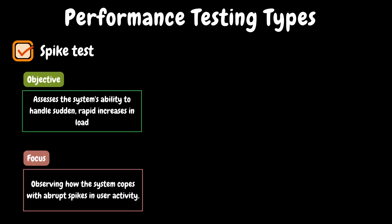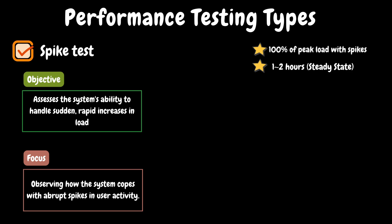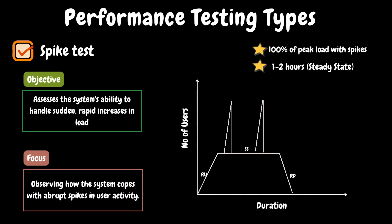The next one on our list is the spike test. This is also an optional test and will be scheduled based on specific requirements. Some applications may experience sudden spikes during busy hours — users may jump from 100 to 1000. This test validates the system's ability to handle such spikes. With this test, we try to understand how the system behaves during sudden spikes and whether there is any change in application performance during the spiky period. We will test this with 100% peak load and introduce sudden spikes in the middle of the test. This test will be scheduled for 1 to 2 hours of steady state duration.